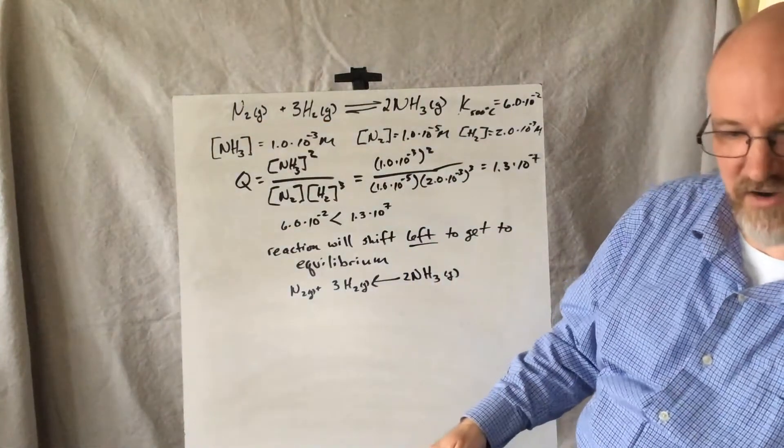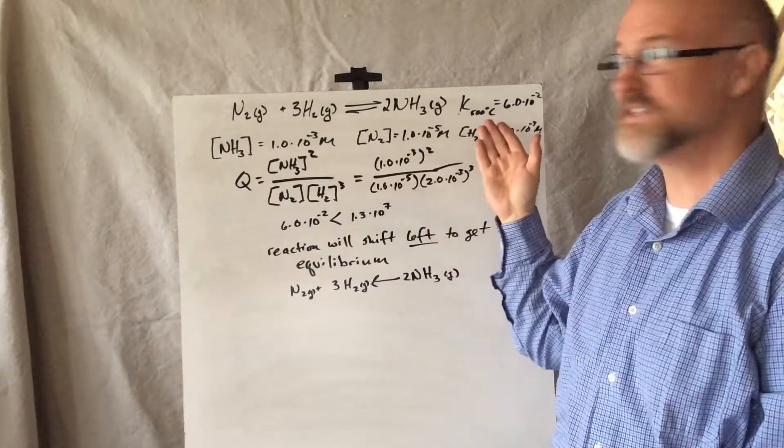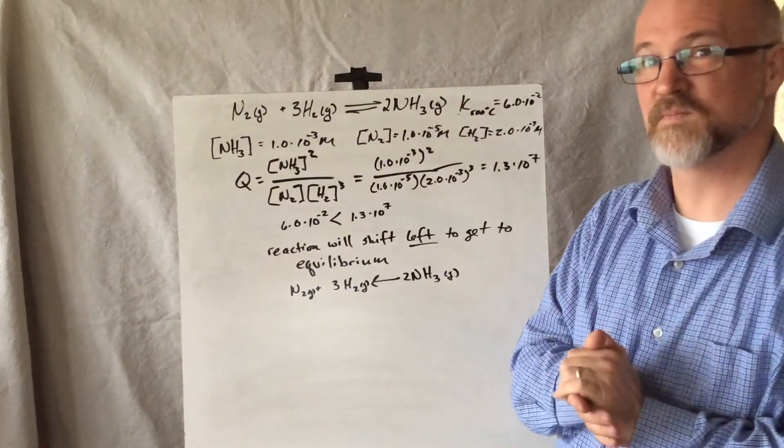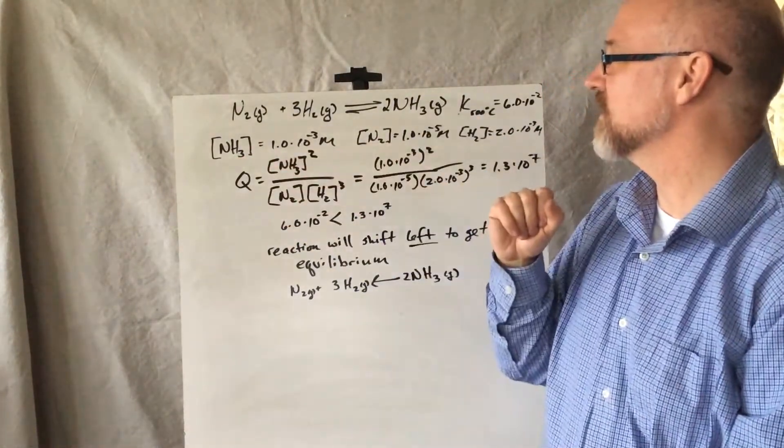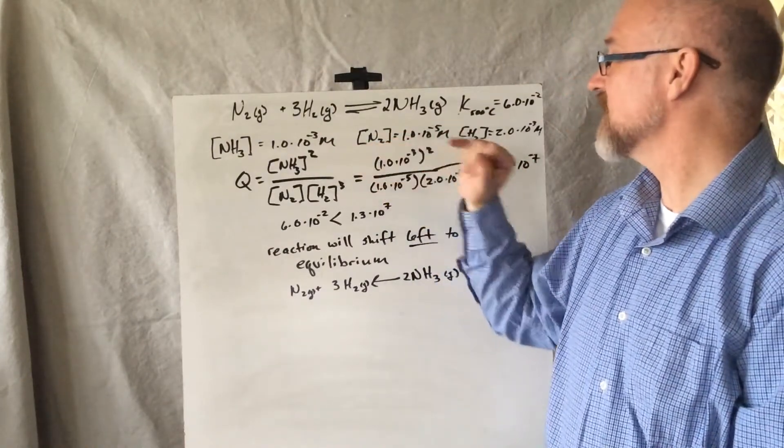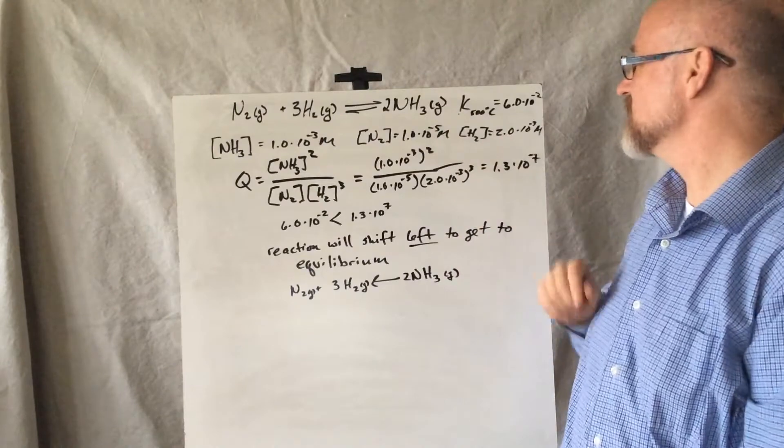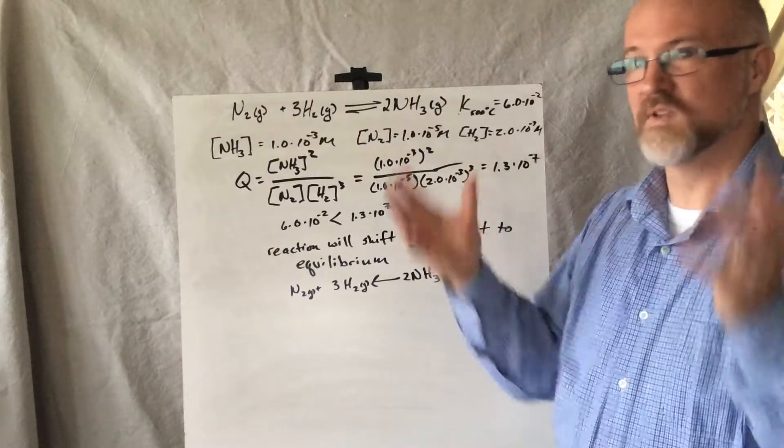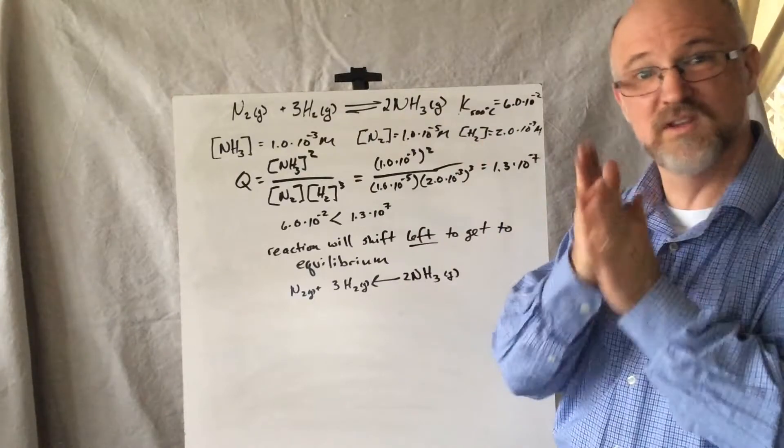So here's our nitrogen and hydrogen becoming ammonia example. And under a given set of conditions at 500 degrees Celsius, the K value is 6.0 times 10 to the negative 2. So if we have a scenario where in a reaction vessel we have a certain amount of ammonia, 1.0 times 10 to the negative 3rd molar, and in the same container, 1.0 times 10 to the negative 5th molar of nitrogen gas, and 2.0 times 10 to the negative 3rd molar of hydrogen gas. If that's our mixture, what's going on in terms of the reaction? Is it going forward, is it going backwards, or is it already where it's going to be in a dynamic balance?